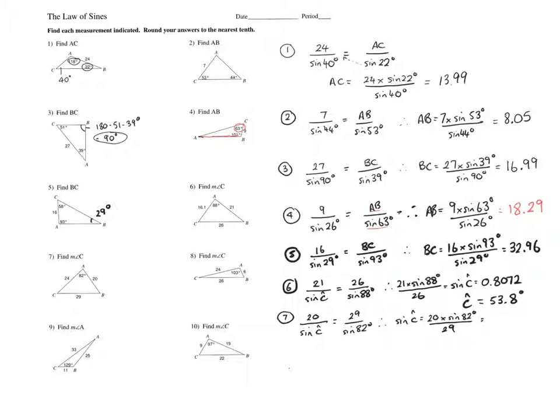So question seven. Sine C is 0.6829. And angle C equals 43.07. I'll put degrees there.